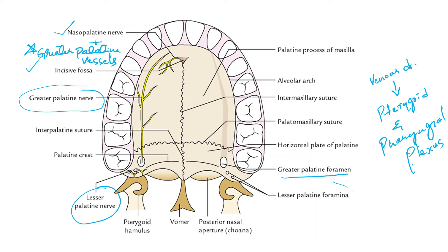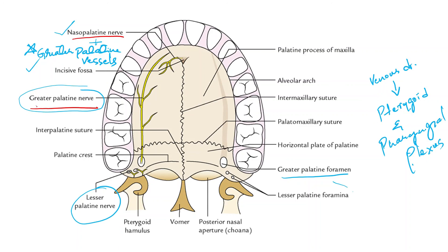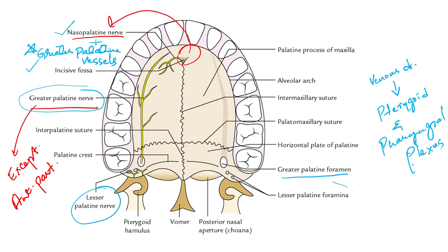The nerve supply of the hard palate is by the greater palatine and nasopalatine nerves, which are derived from the pterygopalatine ganglion. The greater palatine nerve supplies the entire hard palate except the anterior part against the incisor teeth, which is supplied by the nasopalatine nerve.